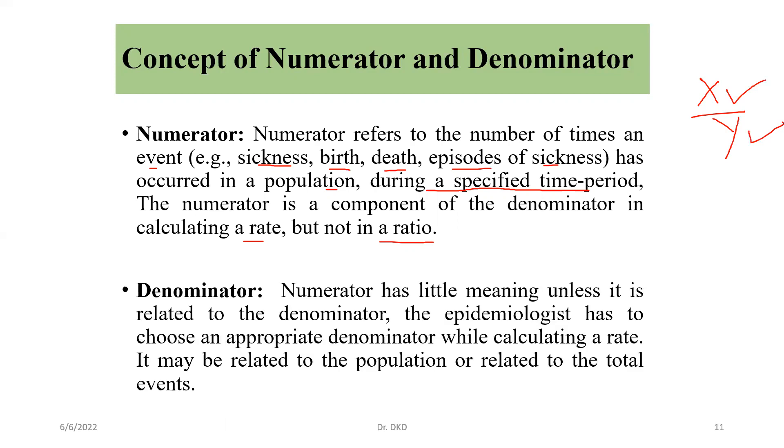And denominator, in denominator, we can define numerator has little meaning unless it is related to the denominator. That means the epidemiologist has to choose an appropriate denominator while calculating a rate. It may be related to the population or related to the total events.